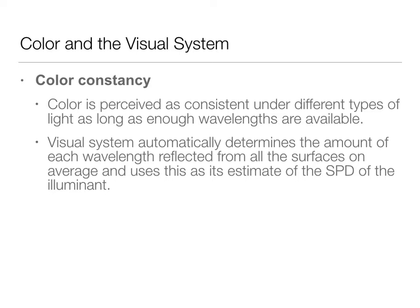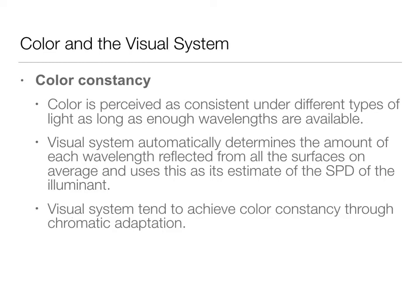Basically what's happening — and this is how the visual system can get tricked — is that it's going to be estimating and automatically determining these things. The visual system tends to achieve color constancy through chromatic adaptation. Remember when we were looking at those four color squares and we saw the after-image when looking at that green and black American flag — that was chromatic adaptation. This color constancy operates on those same similar processes.